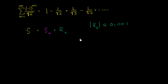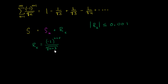Let's remind ourselves what r sub k looks like. R sub k is going to start with the k plus first term, so it's going to be negative one to the k plus two, over the square root of k plus one. Then the next term is plus negative one to the k plus three, over the square root of k plus two. And it just goes on and on like that.